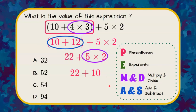Now our last thing left to do is to add and subtract. So 22 plus 10 is 32, giving us an answer choice of A.